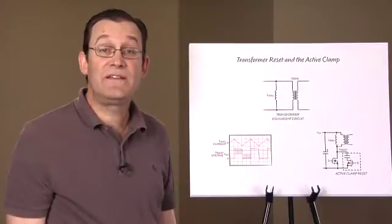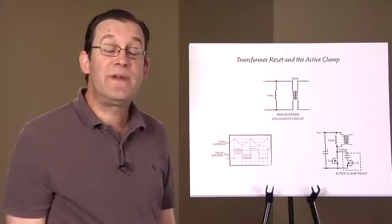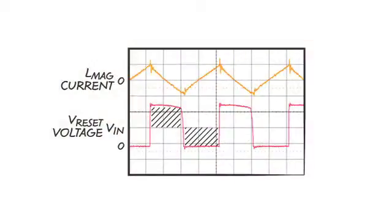When voltage is applied to the transformer, the current in the magnetizing inductance will either ramp up or ramp down. Any imbalance in the transformer voltage will cause the magnetizing current to walk up or down towards saturation.